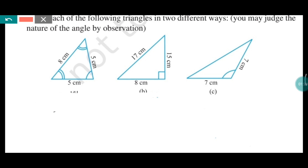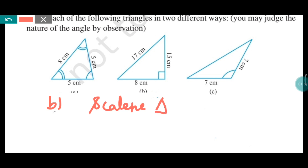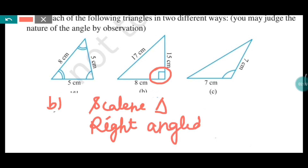Now it is part B. Here you can see the three sides are 17, 15, and 8. All three sides are of different lengths, so it is not equal on any side. That is why it is a scalene triangle.